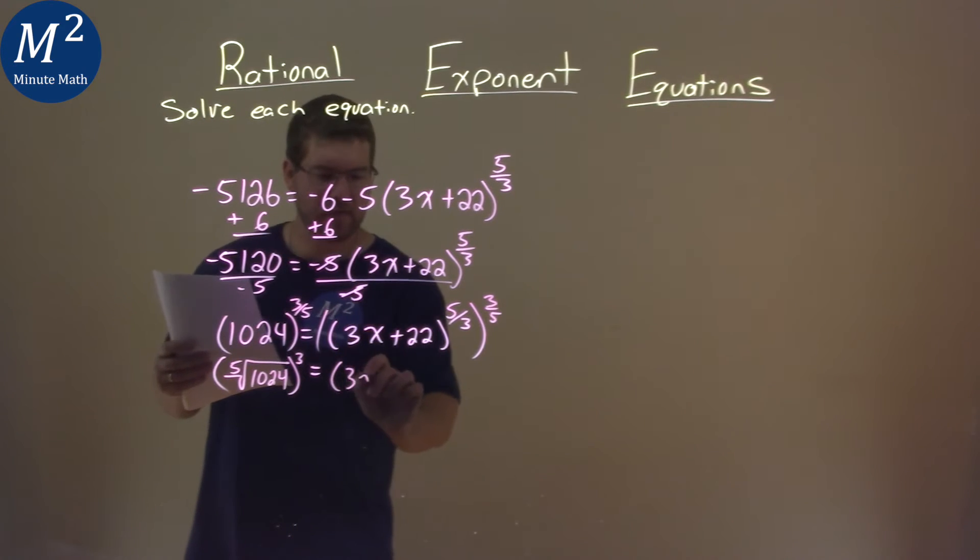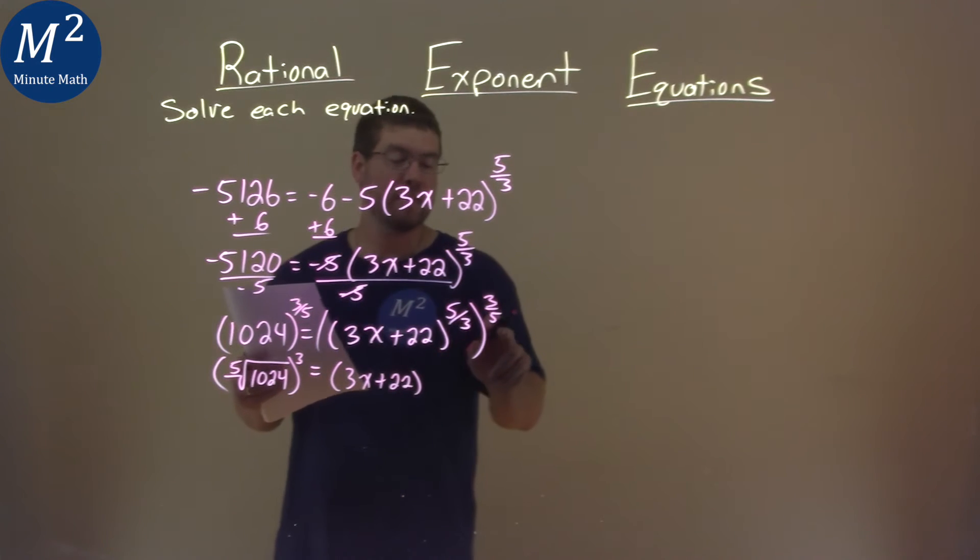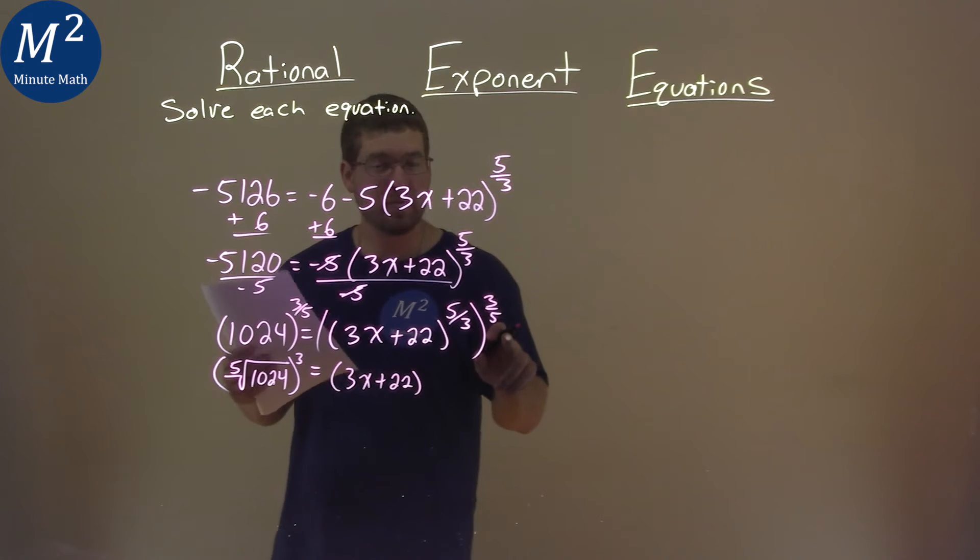The right-hand side, 3x plus 22—our rules state that we multiply the exponents: 5/3 times 3/5 equals 1.